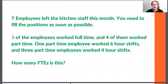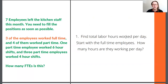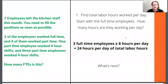All right, let's find out if you got the right answer. The first thing that we do is find the total labor hours worked per day, and first we're going to start with the full-time employees. We have three full-time employees and each of them are working eight hours per day. So cumulatively, the amount of labor hours being put in is 24 — three times eight equals 24 hours worked by the full-time employees each day.